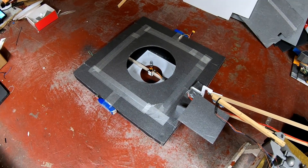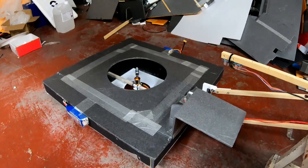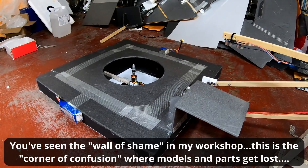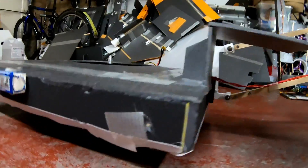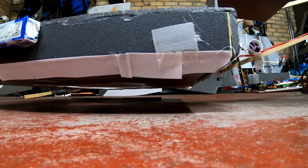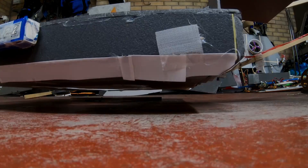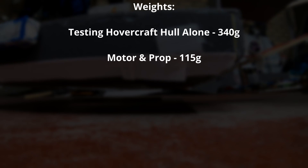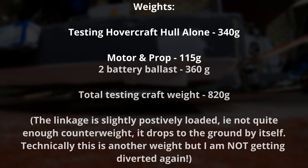Onto the actual testing — this was the configuration. I'm using my testing hovercraft, just keeping it in hovercraft range, so it'll be quite close to the ground. What I've done is add two batteries for ballast. If this were an actual working hovercraft, one battery would represent the flight battery and the other would represent the linkages, receiver, and ESC. The hull alone — just the testing model, no motor or anything — is about 320 grams. Motor, propeller, and mount about 150 grams thereabouts; I'll put the exact figures on screen.